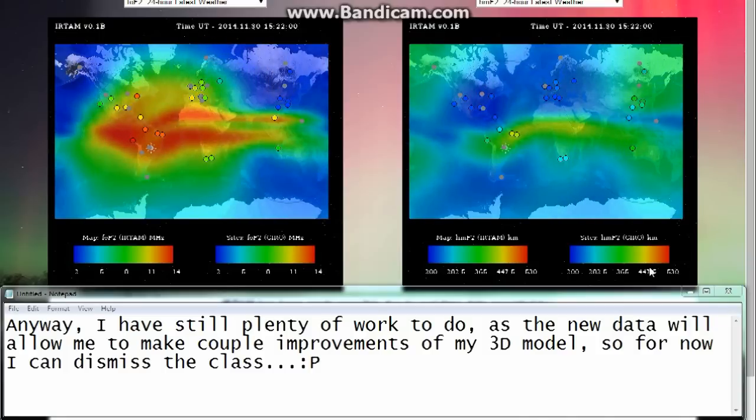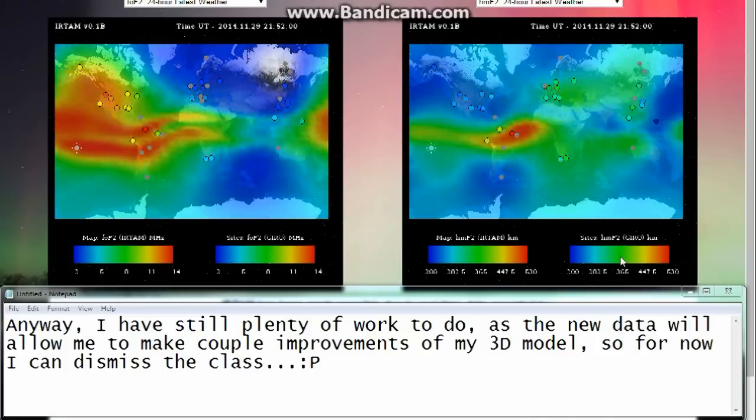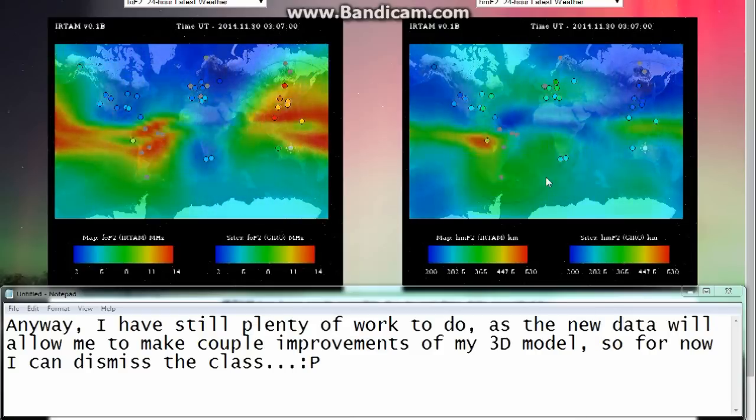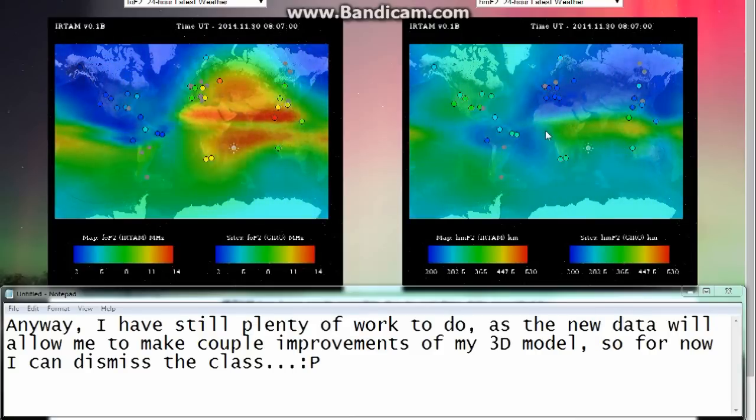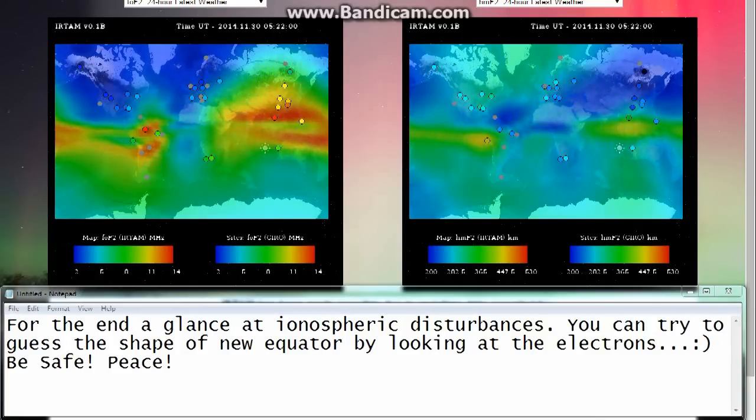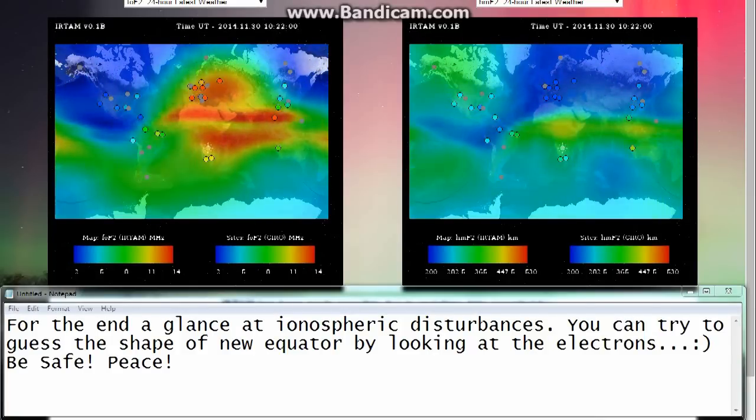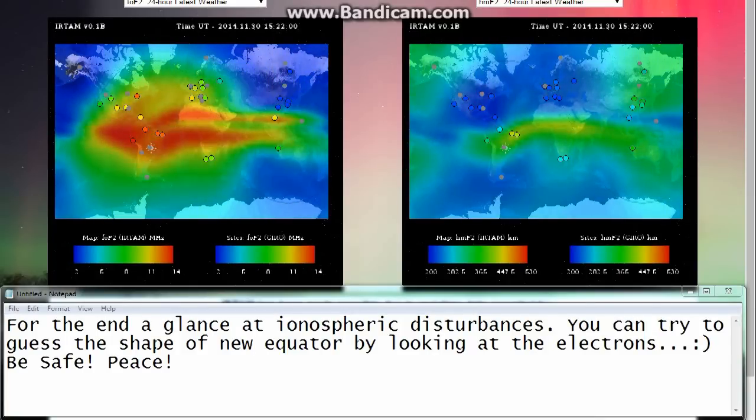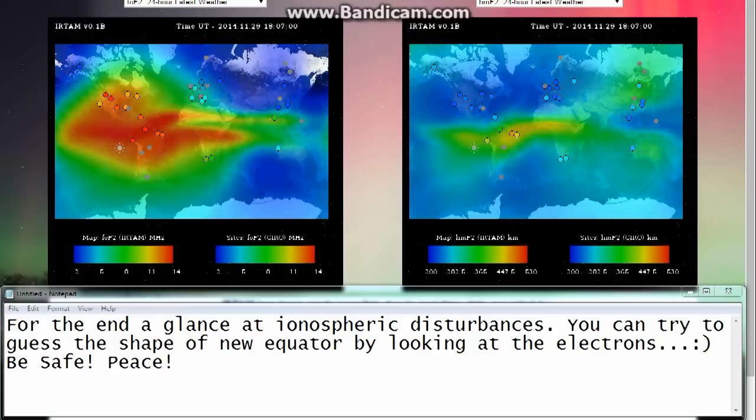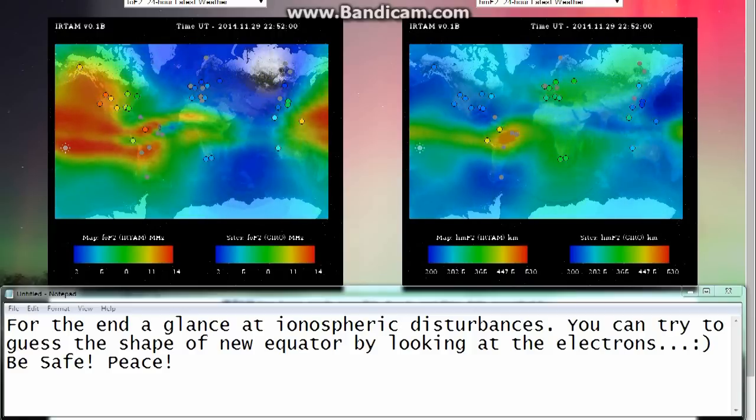Anyway, I have still plenty of work to do, as the new data will allow me to make a couple improvements of my 3D model. So for now, I can dismiss the class. For the end, a glance at ionospheric disturbances. You can try to guess the shape of the new equator by looking at the electrons. Be safe. Peace.